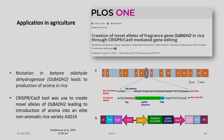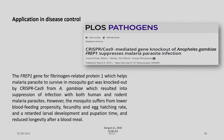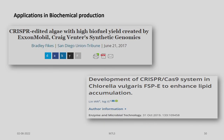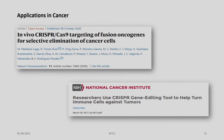There are various other applications in disease control, particularly knockout of Anopheles gambiae which suppresses malarial parasite infection. CRISPR-edited algae with high biofuel yield has been created by ExxonMobil, and a CRISPR-Cas9 system has been developed in Chlorella vulgaris to enhance lipid accumulation. Many of these are being looked at as solutions to the energy crisis and food crisis in the future.